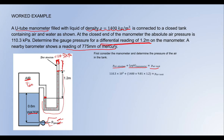Substituting everything we know: the absolute air pressure is 110.3 kPa, written as 110.3 × 10³ Pa, plus rho = 1400, g = 9.81, times the differential height h = 1.2 m. Substituting all values, the pressure in the tank equals 126.8 kPa, or 126.8 × 10³ Pa (N/m²). So we have found the air pressure in the tank.